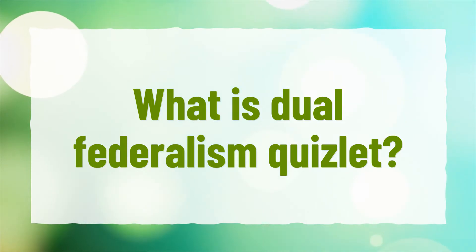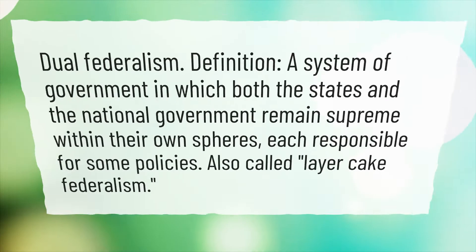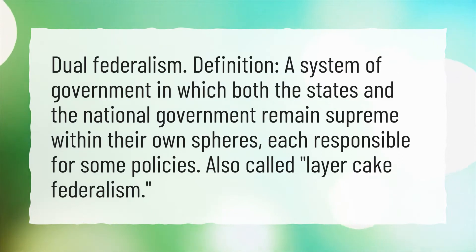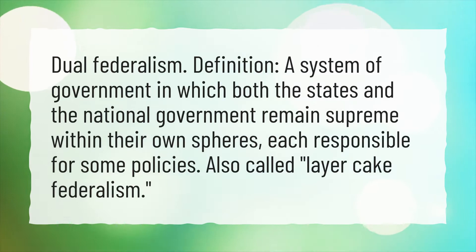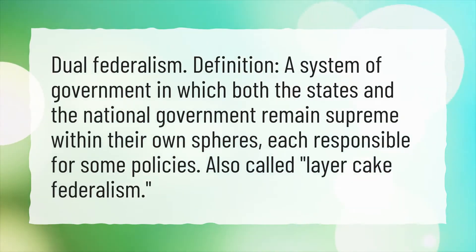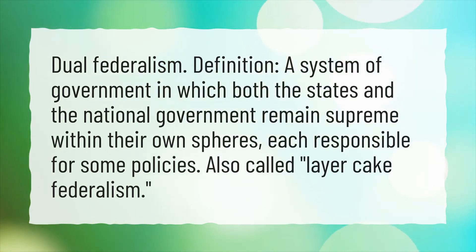What is Dual Federalism? Dual Federalism definition: a system of government in which both the states and the national government remain supreme within their own spheres, each responsible for some policies. Also called layer cake federalism.